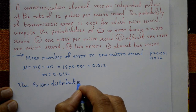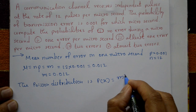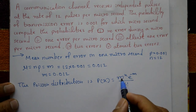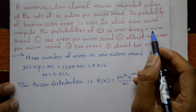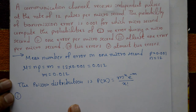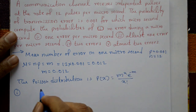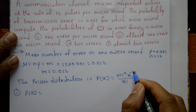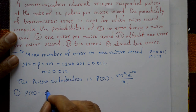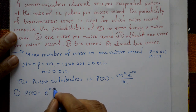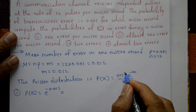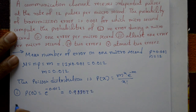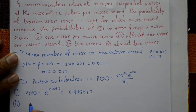With mean m equal to 0.012, case 1 is no error during a microsecond. Put x equal to 0. P(0) equals m raised to 0, which is 1, divided by 0 factorial, which is 1, times e raised to minus m. Substituting m equals 0.012, this equals 0.9888072.